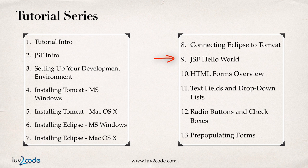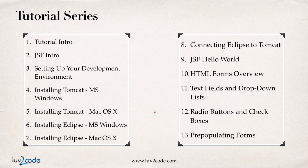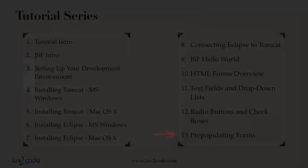Then we'll go forward and I'll show you how to build a JSF Hello World program. Once we have the Hello World working, then we'll actually run it on our Tomcat server. Next, we'll move forward and talk about HTML forms. I'll give you an overview of the forms and then we'll go through and take a look at some of the key components like text fields and drop-down lists. Then I'll also show you how to make use of radio buttons and check boxes.